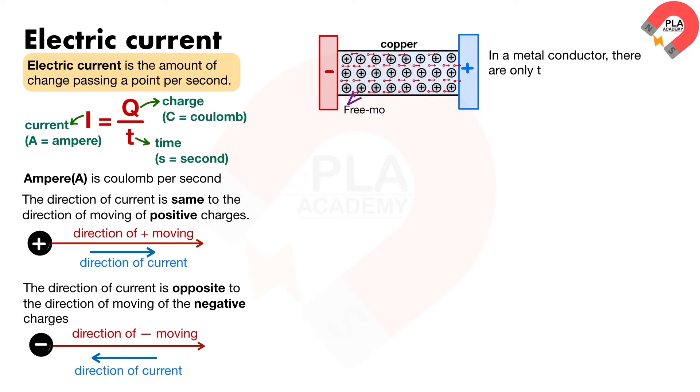In a metal conductor, there are only the free-moving electrons that can flow. When two oppositely charged conductors are connected together by a metal conductor such as copper, charge will flow between the two conductors. This flow of charge is called an electric current. The greater the flow of charge, the greater the electric current.